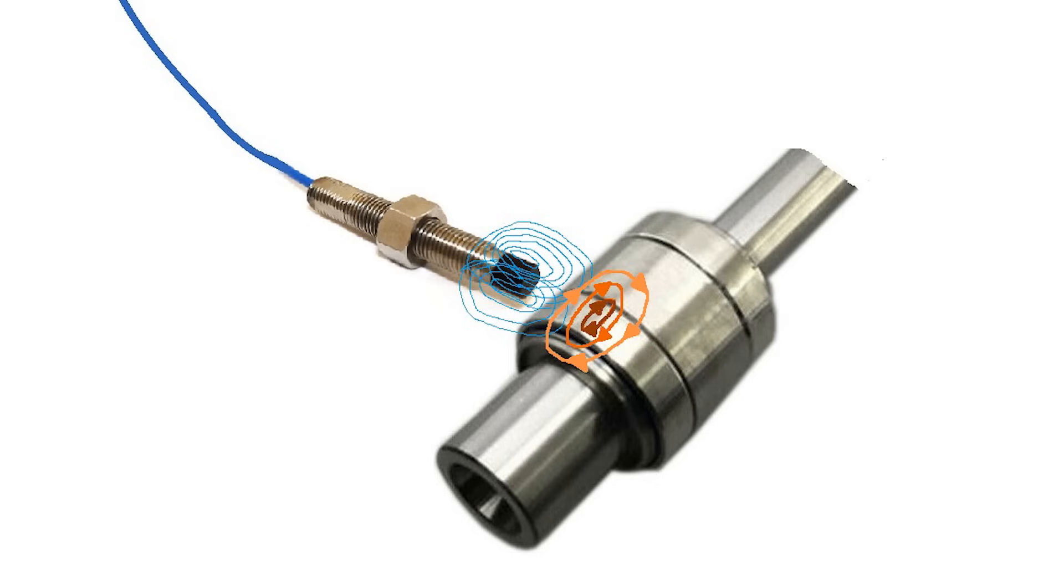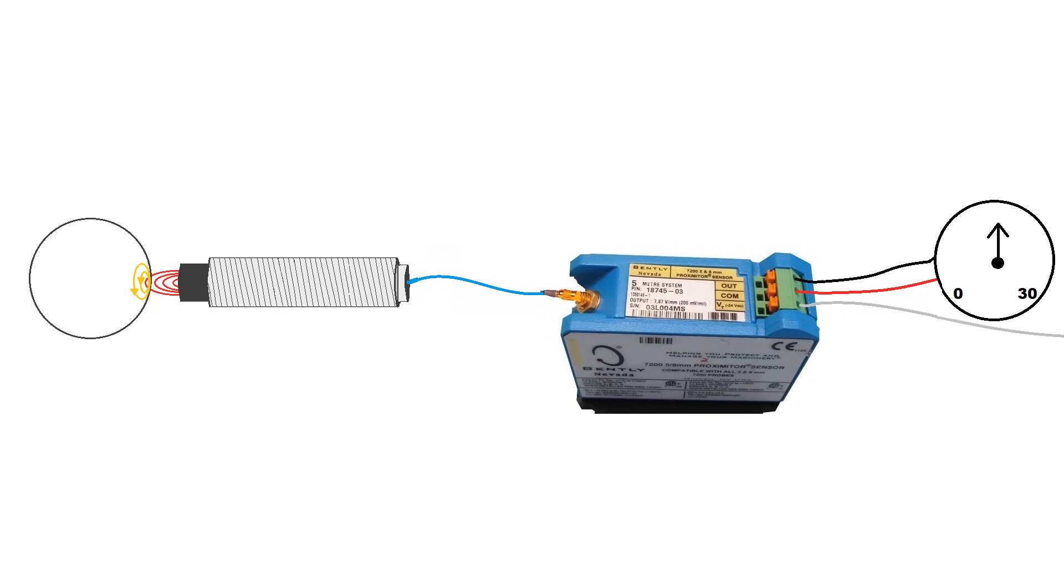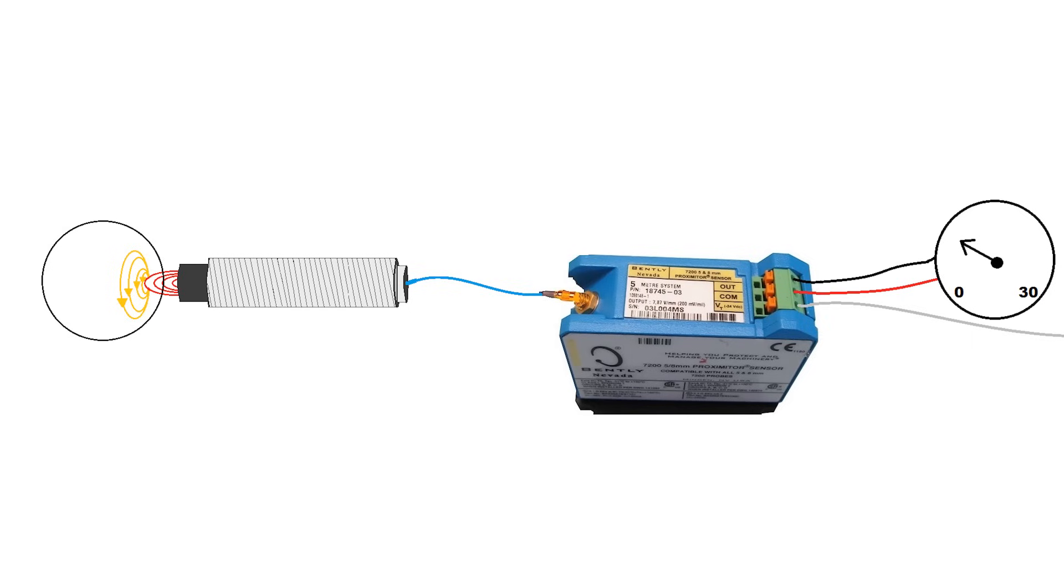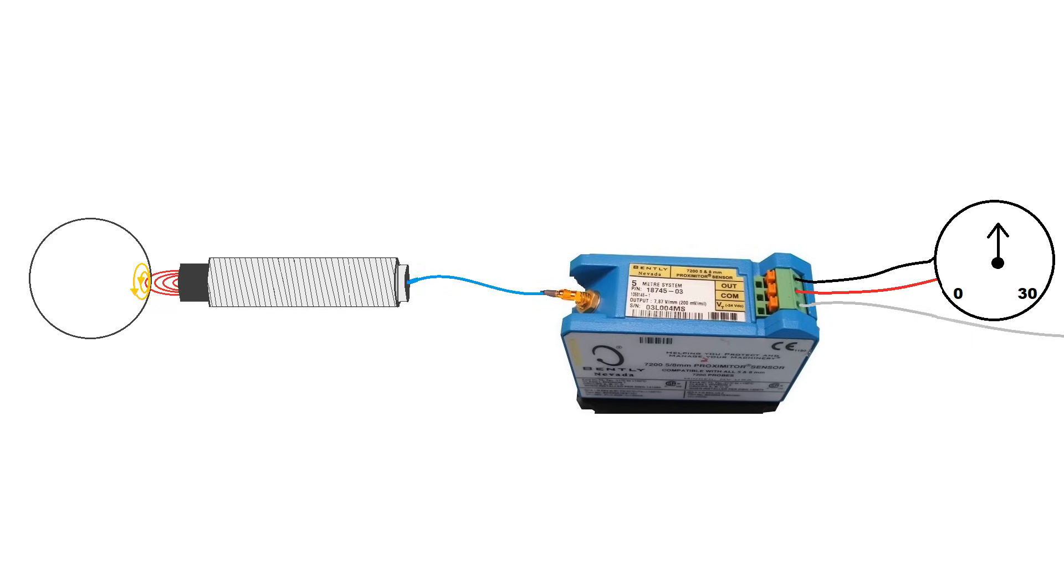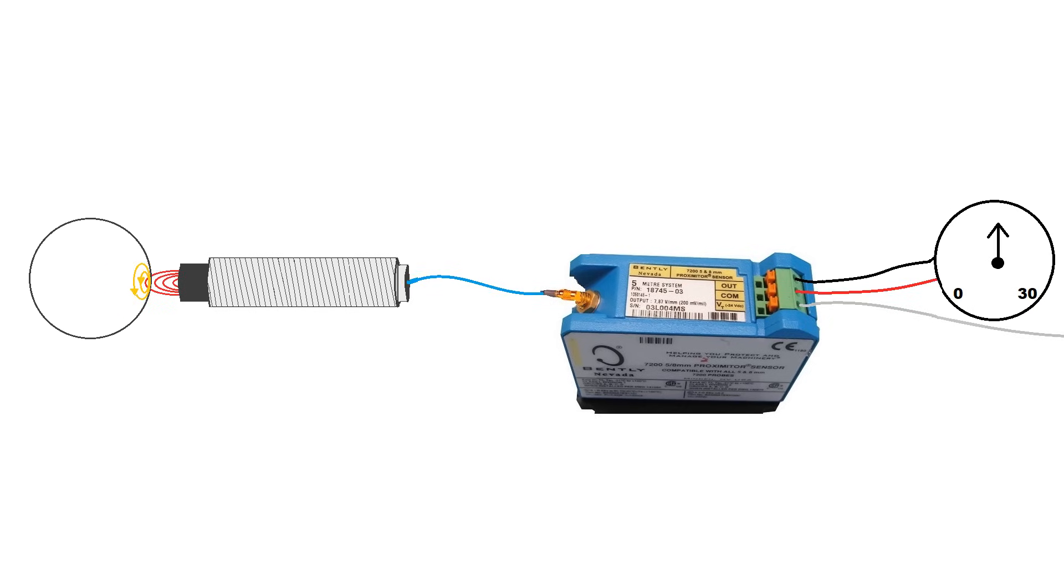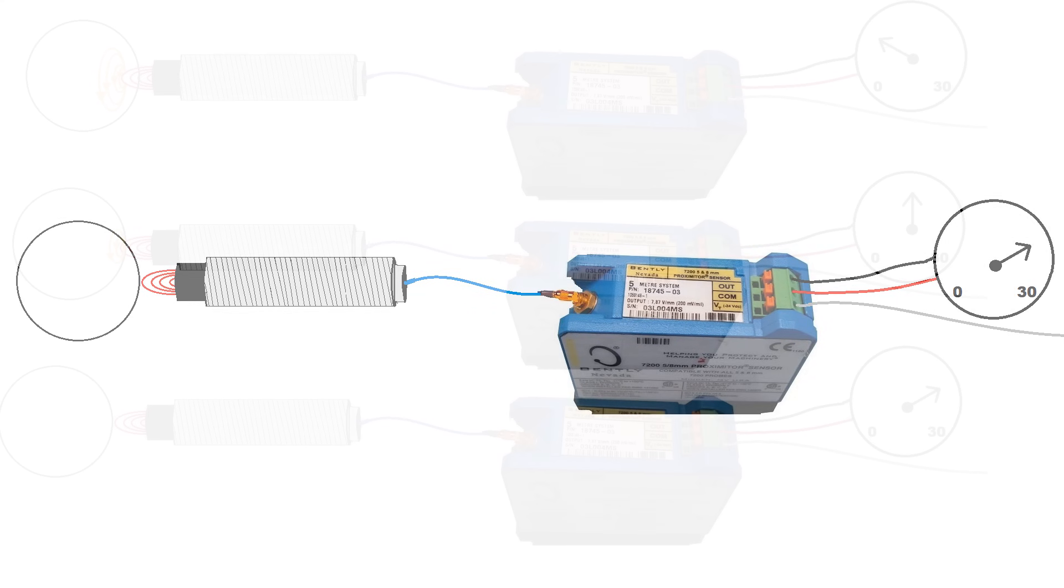The induction results in a loss of power. This loss of power is translated as a voltage change on the output terminals of the proximitor. The closer the metallic object is to the end of the probe, the more induction will occur and therefore the lower the output voltage of the proximitor. As the object moves away from the end of the probe, the output voltage will increase.